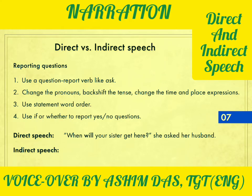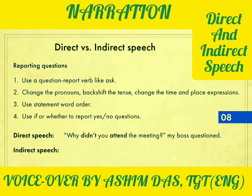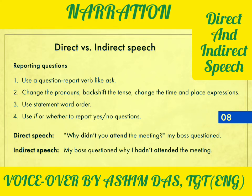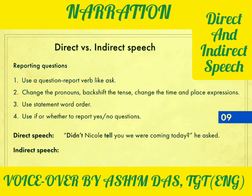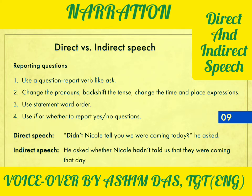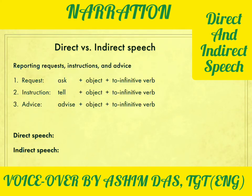Sentence seven: 'When will your sister get here?' she asked her husband. She asked her husband when his sister would get there. Sentence eight: 'Why didn't you attend the meeting?' my boss questioned me. My boss questioned why I hadn't attended the meeting — a negative simple past backshifts to past perfect negative. Sentence nine: 'Didn't Nicole tell you we were coming today?' he asked. He asked whether Nicole hadn't told us that they were coming that day.